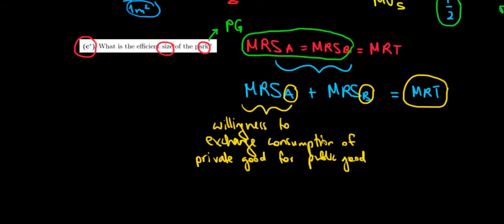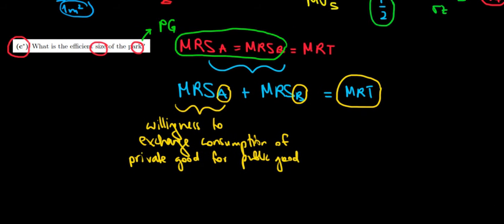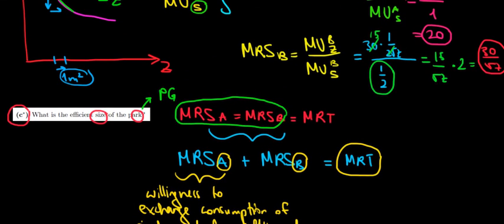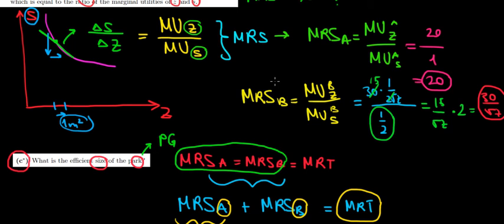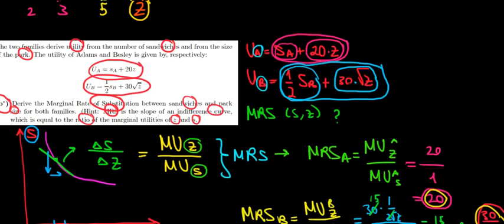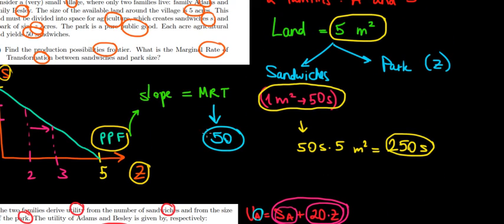What are the marginal rate of substitutions for each of them? Well, we calculated them before. That's 20 for family A and 30 divided by square root of Z for family B. Now, what's going to be our marginal rate of transformation? We also calculated two videos ago. Let's just take it from here. MRT was 50.